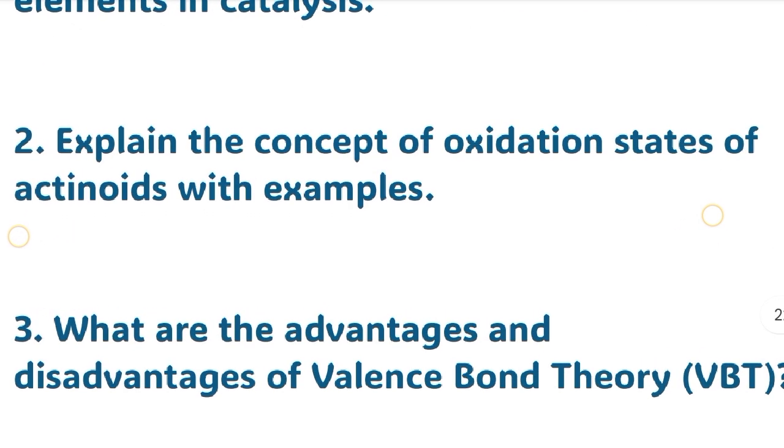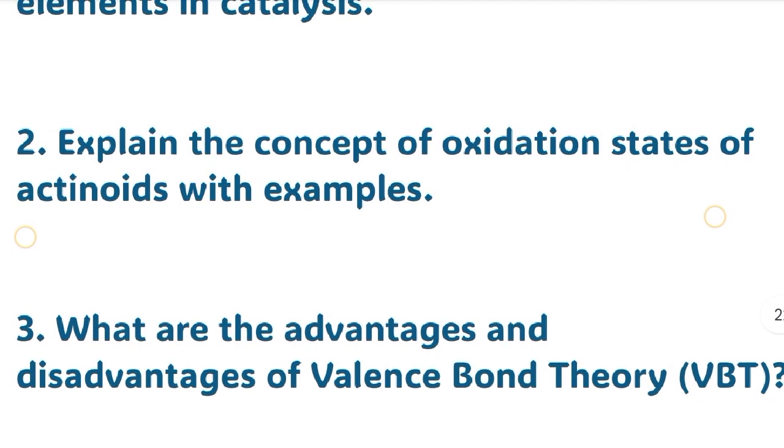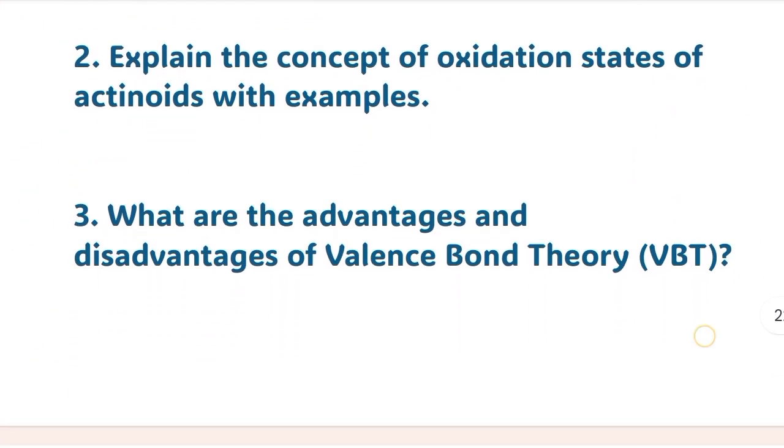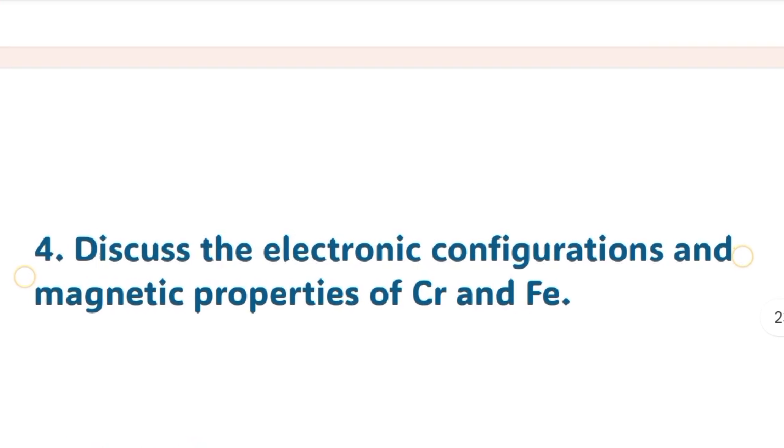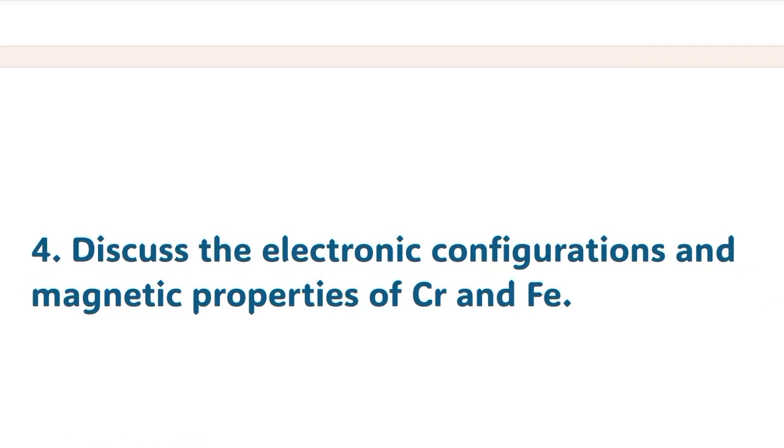Third question: What are the advantages and disadvantages of Valence Bond Theory (VBT)? Fourth: Discuss the electronic configurations and magnetic properties of chromium (Cr) and iron (Fe).